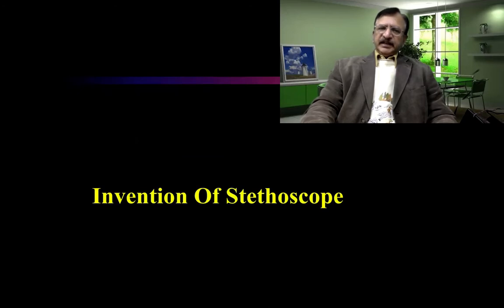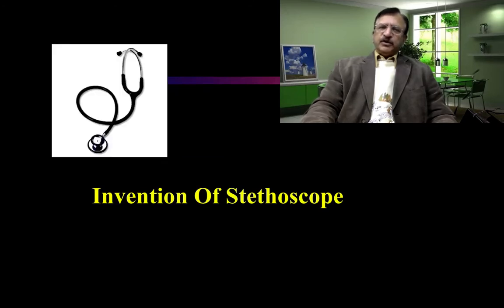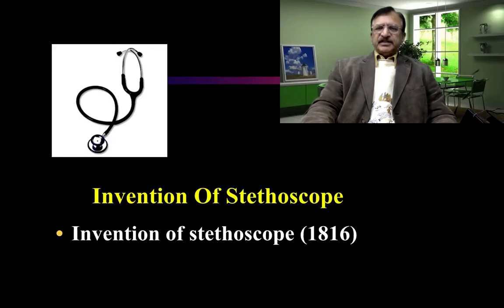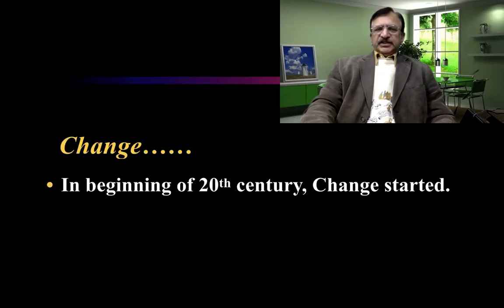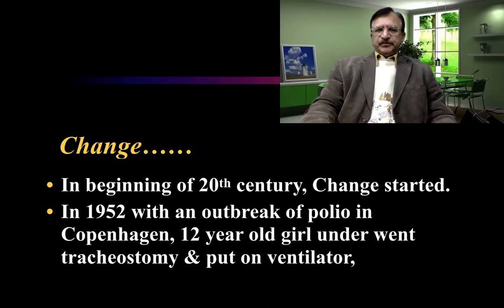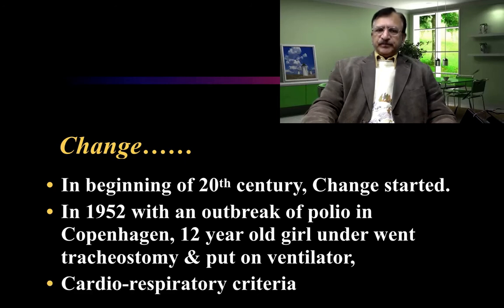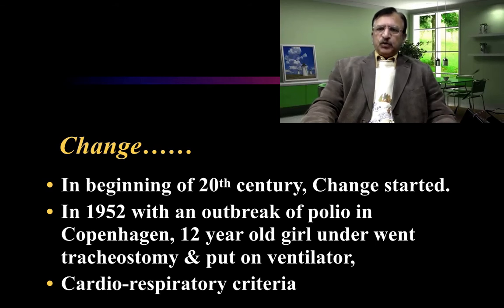The invention of the stethoscope resolved these issues. In 1816, the stethoscope was invented, and physicians began to be trusted in their ability to diagnose death. A further change came in the 20th century: in 1952, with an outbreak of polio in Copenhagen, a 12-year-old girl underwent tracheostomy and was put on a ventilator, and cardiorespiratory criteria were established to declare death.